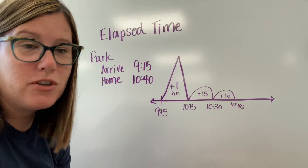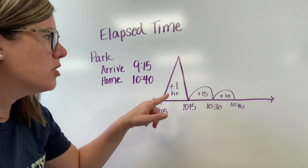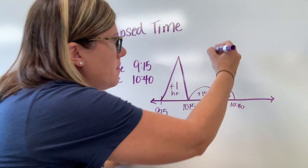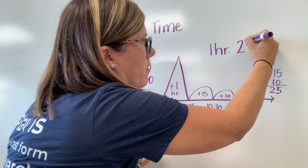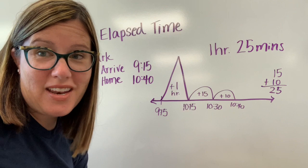Now to find out how much time has elapsed I actually have to do some math and add up how much time is inside my mountains, hills and bumps. This is one hour and then I have to add 15 plus 10. So I was at the park for one hour and if I do 15 plus 10 I get 25. So I was at the park for one hour and 25 minutes.